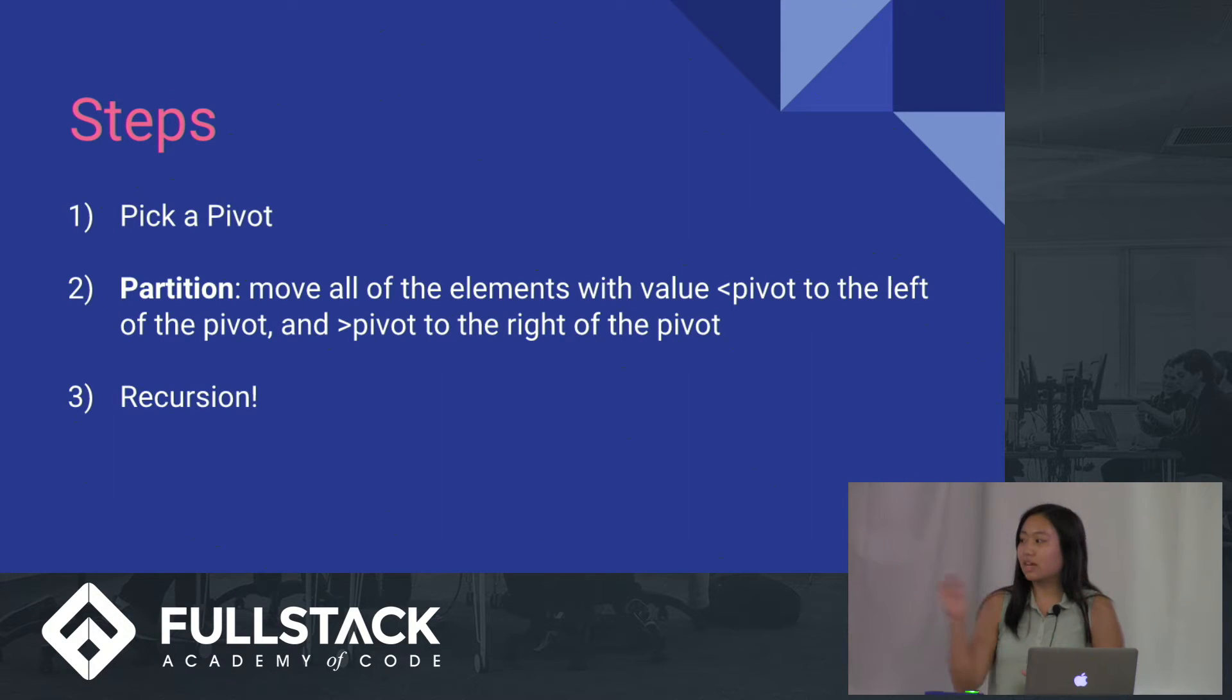The general steps to QuickSort are: step one, pick a pivot, which is a random value in the array. Step two is to partition. Basically you move all values less than the pivot to the left side and all values greater than the pivot to the right side. Step three is recursion. This is just a brief summary. I'm going to go into detail to all three steps.